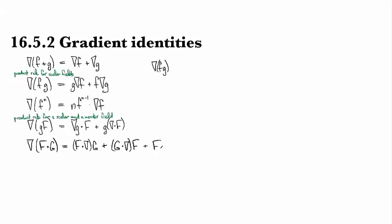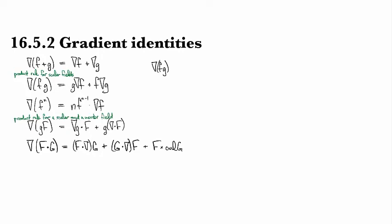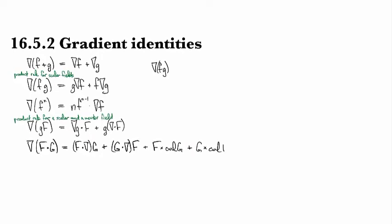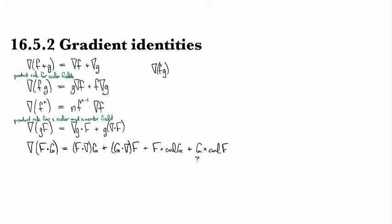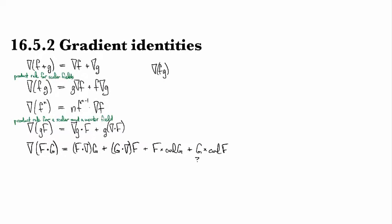And then you need the curl terms which are like f cross curl g plus g cross curl f. Don't quote me on that, I could be wrong. We're not going to need or use that one, but anyways they get worse, they get more complicated. Guess why? Because vector fields are more complicated than scalar fields. Okay, back on target.